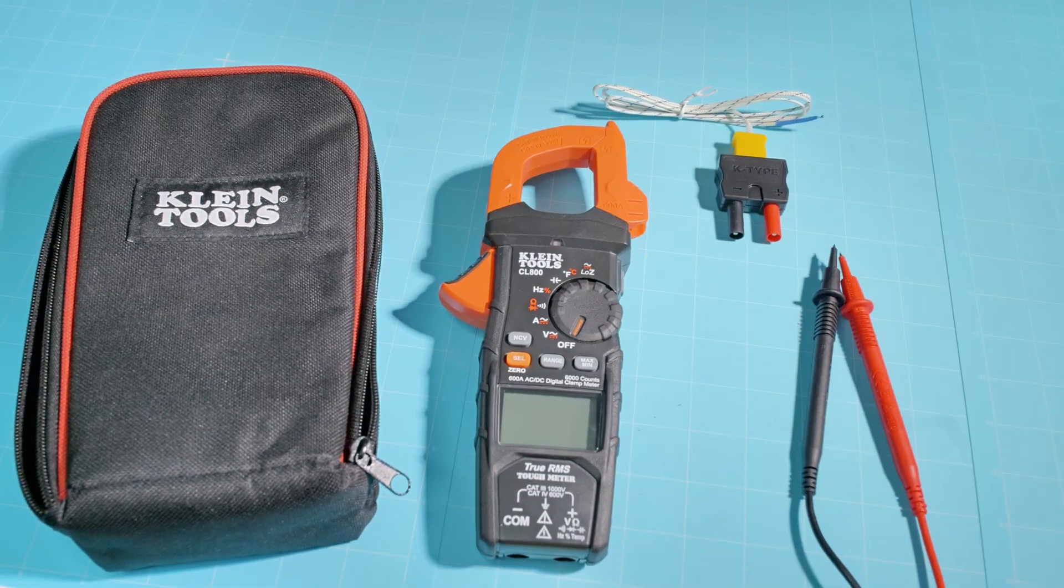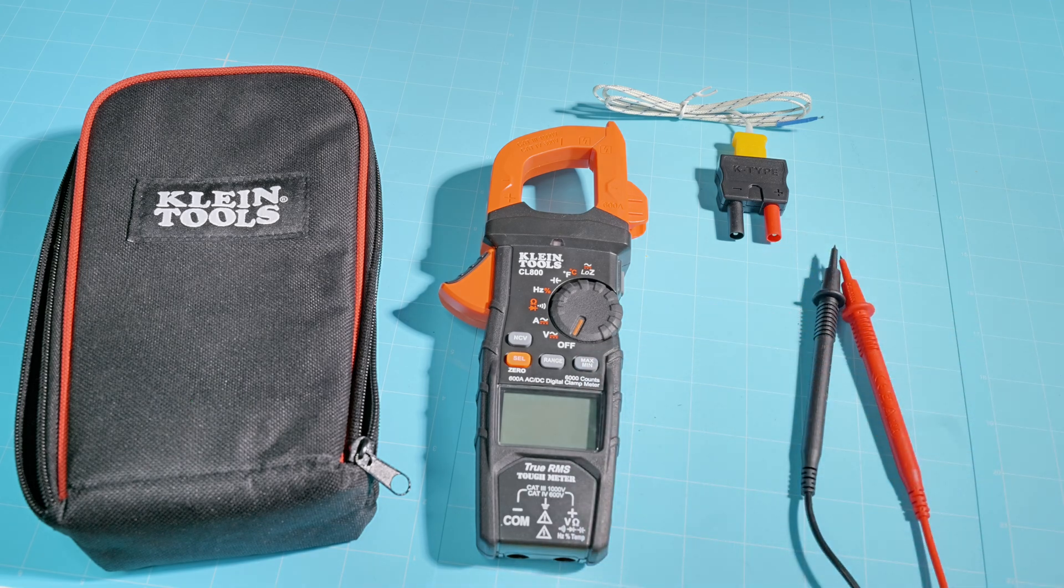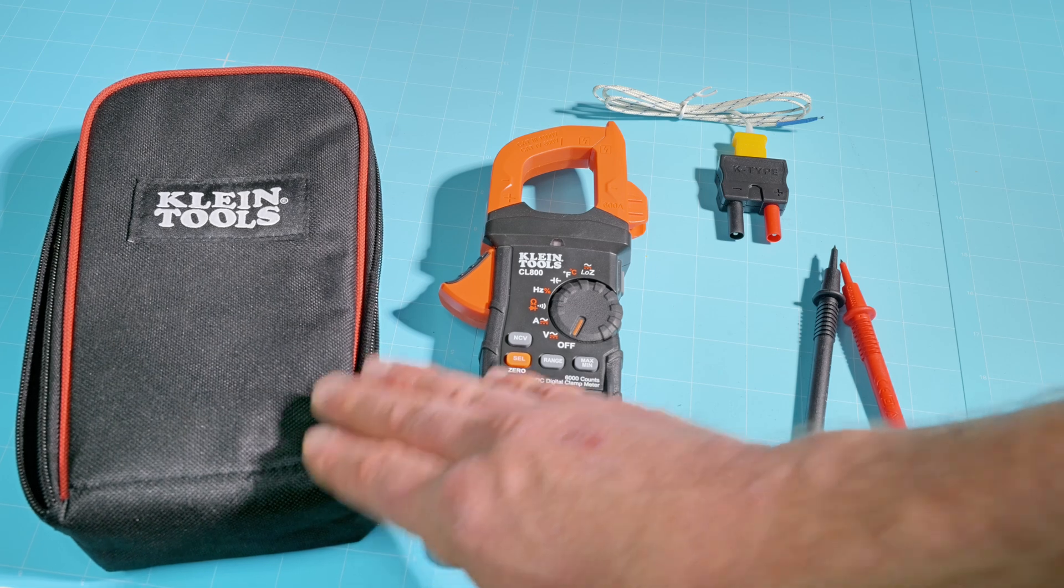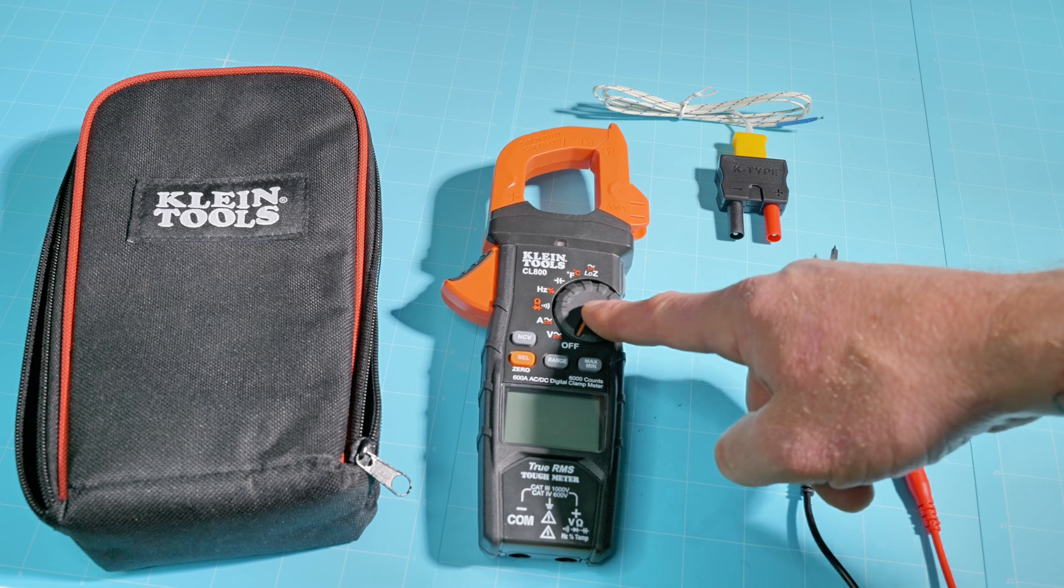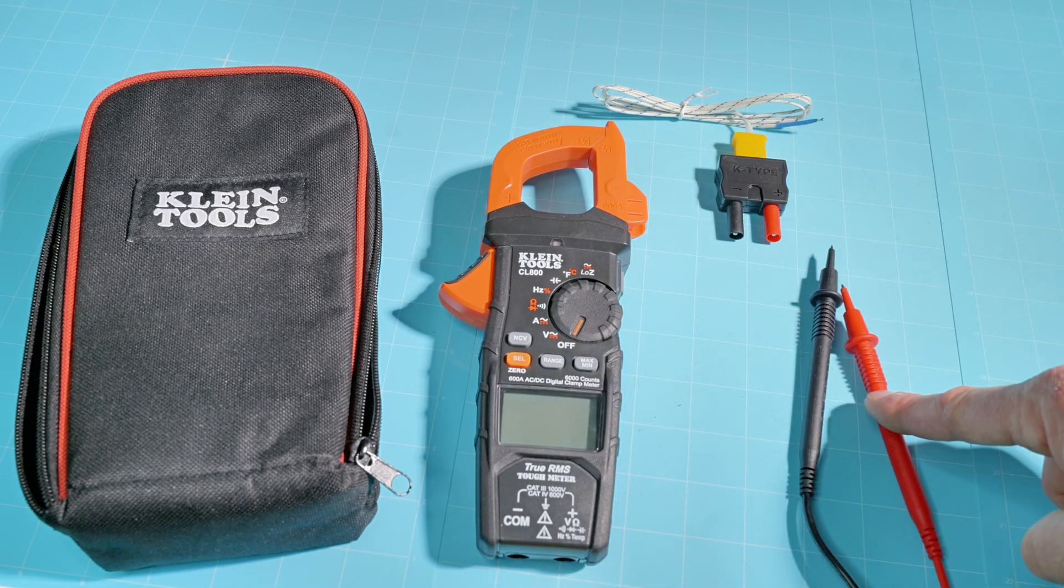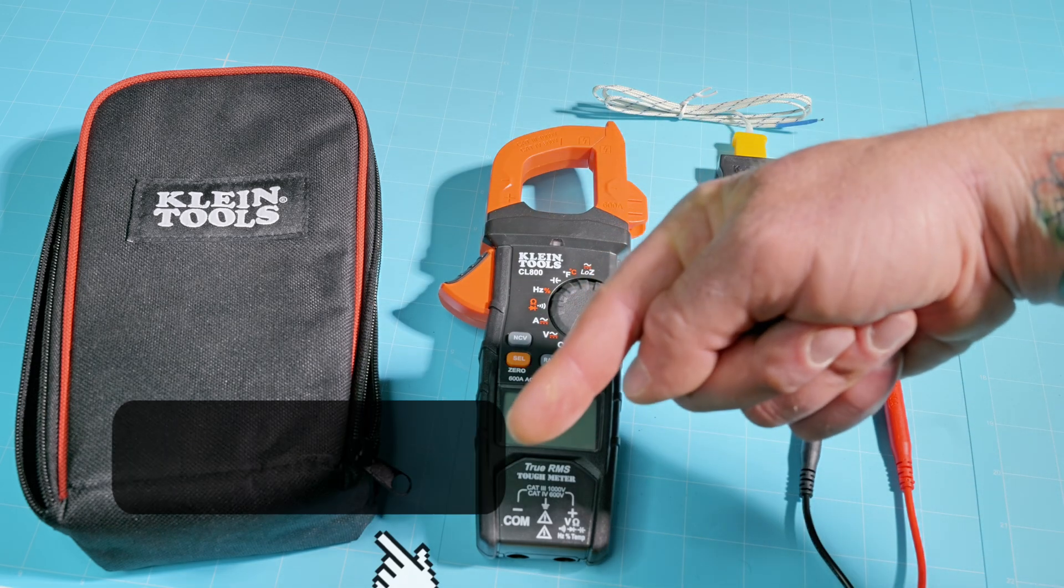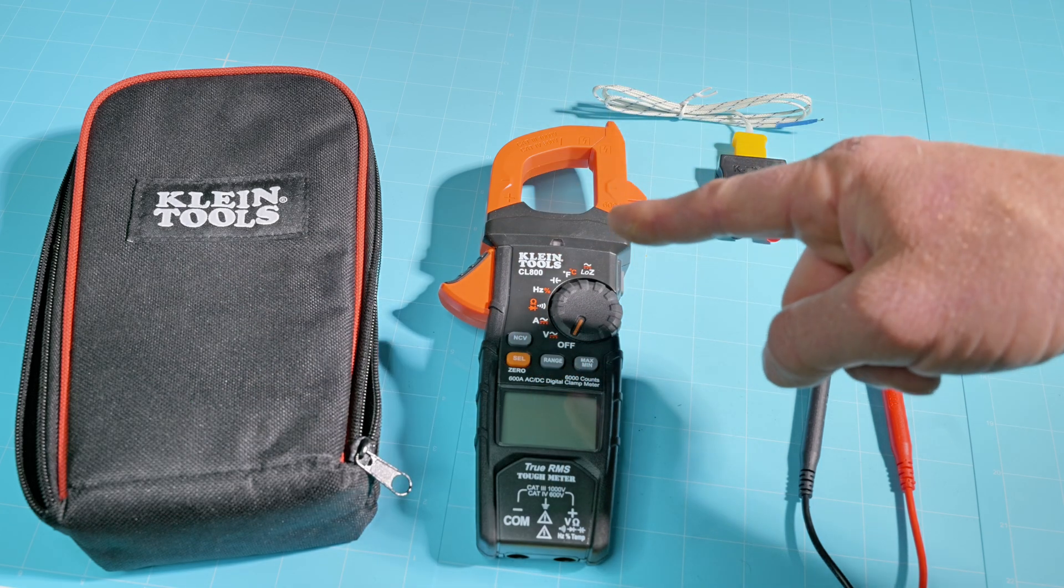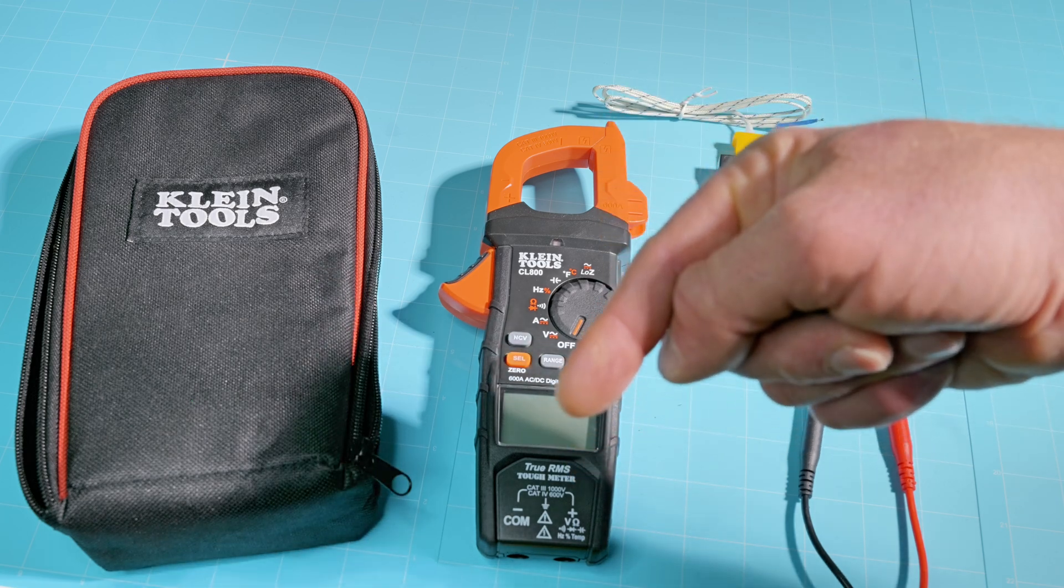Okay, we've made it over to our workbench. Real quick, I've laid out everything that this CL800 comes with. As you can see, it comes with a soft carrying bag large enough to carry everything. We've got our meter itself, temperature probes, and your standard DMM red and black multimeter leads. I've dropped a link in the description where you can pick up this entire kit on Amazon for super cheap, so check that out.